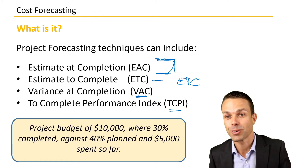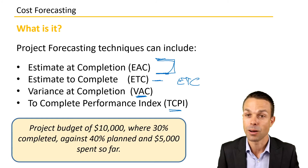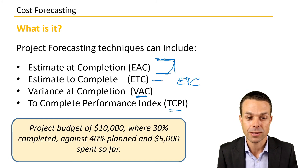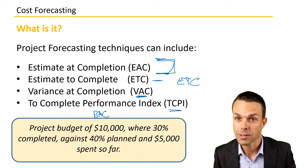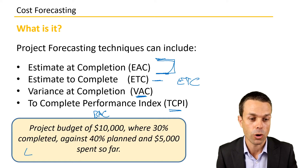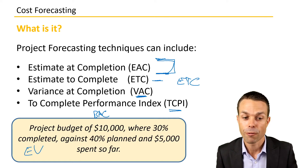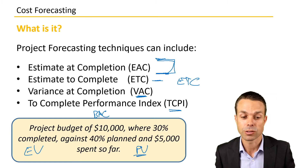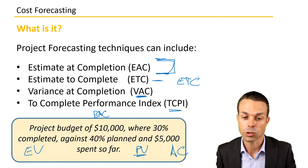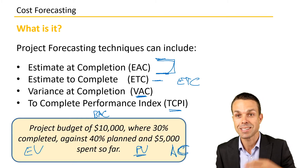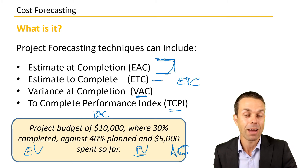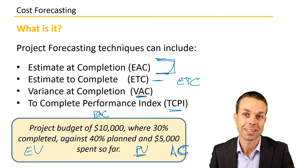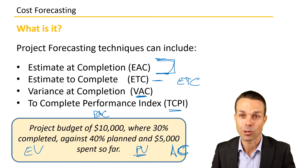The scenario we're going to go through for all of these is a project budget — budget at completion — of $10,000, where 30% is completed, which is our earned value, against 40% planned, which is our planned value, and $5,000 spent so far as our actual cost. We'll use these figures in the calculations for this particular project scenario.